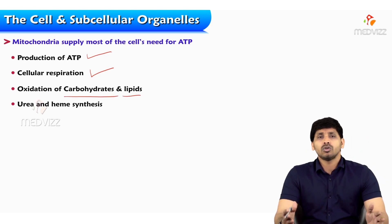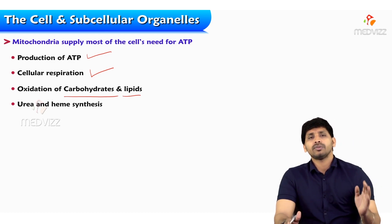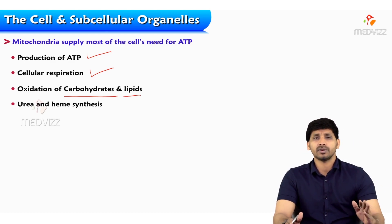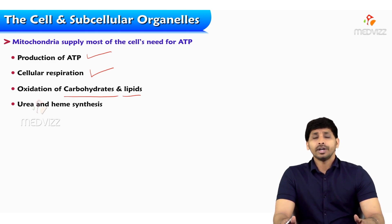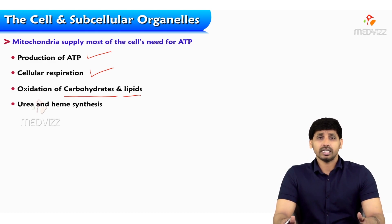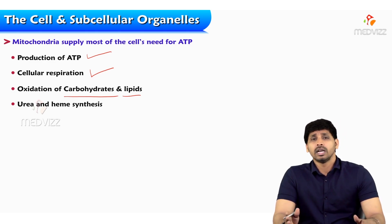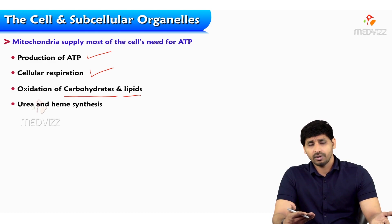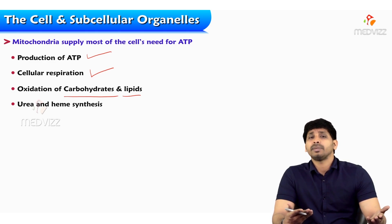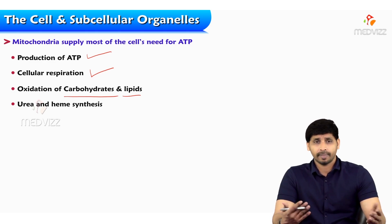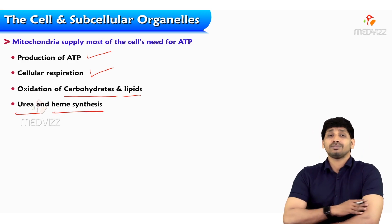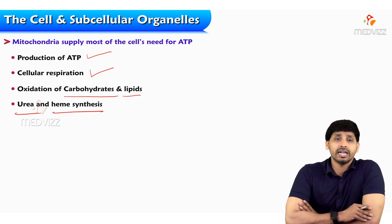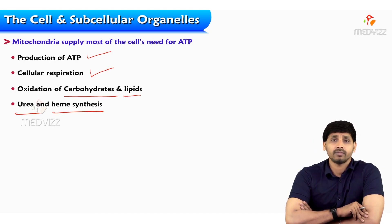Other functions include oxidation of carbohydrates — the sequential removal of carbons from glucose with production of reducing equivalents — as well as lipid oxidation via fatty acid beta oxidation. Additionally, a few steps of the urea cycle and heme synthesis also take place in mitochondria.